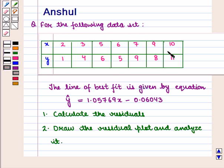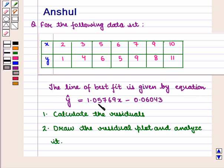The given data set has x values of 2, 3, 5, 6, 7, 9, 10 and the corresponding y values of 1, 4, 6, 5, 9, 8, 11. The line of best fit is given by the equation ŷ = 1.05769x − 0.06043.